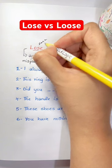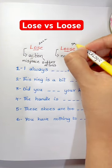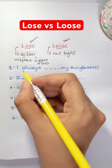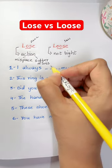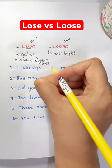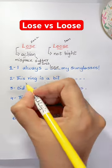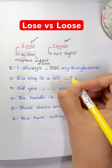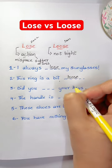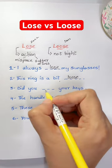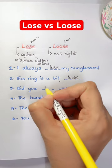Loose has a long vowel sound and the S is pronounced as a Z sound. Lose has a short vowel sound and the S is pronounced as an S. For example: 'I always blank my sunglasses' — here you've misplaced something, so: I always lose my sunglasses. 'This ring is a bit blank' — it's not tight, so: this ring is a bit loose.